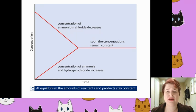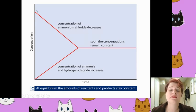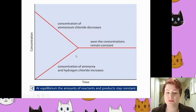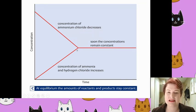If we were to represent this graphically, we start with high concentration of reactants and zero product concentration because the reaction hasn't started. This is for ammonium chloride decomposing to make ammonia and hydrogen chloride. As it decomposes, product concentration starts increasing while reactant concentration decreases. The point where those lines intersect is where the equilibrium has been established — the dynamic equilibrium point.